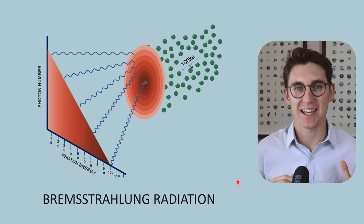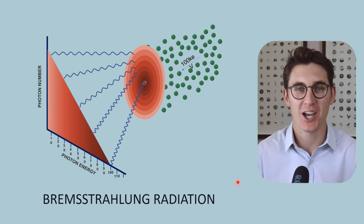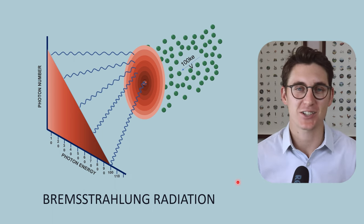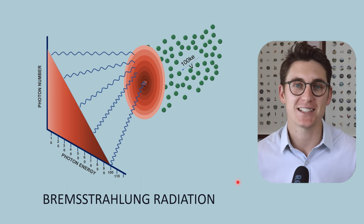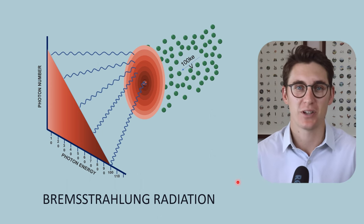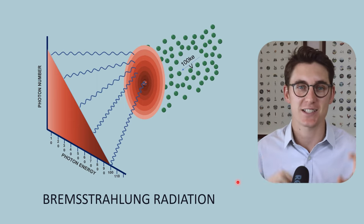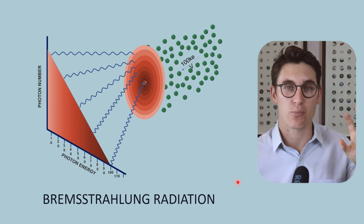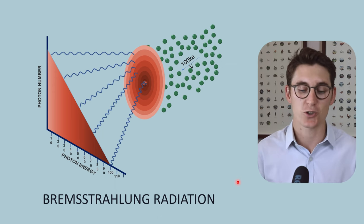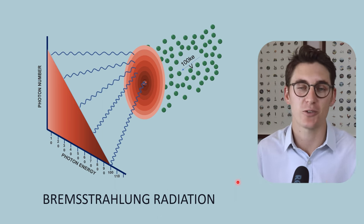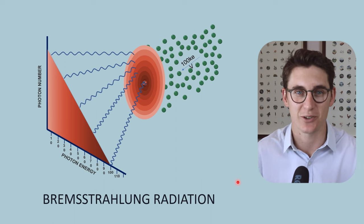Having spent some time looking at the x-ray tube, the x-ray circuit, as well as x-ray beam geometry, we can get into the meat of our x-ray physics module by looking at how we actually go about creating x-rays within the x-ray tube. Now as I've mentioned, there are two separate mechanisms that we create x-rays at the anode. The first is via Bremsstrahlung radiation, and the second is characteristic radiation. In this first talk, we're going to focus specifically on Bremsstrahlung radiation before moving on to characteristic radiation in our next talk.